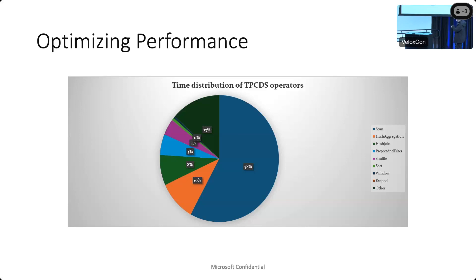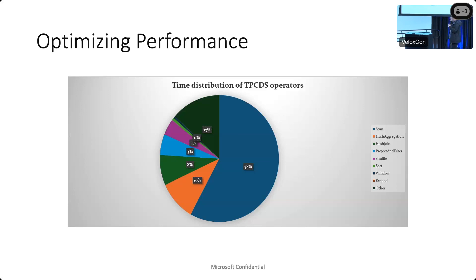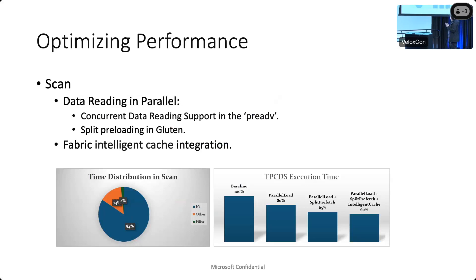This chart is from one of our metrics reports. It shows the time distribution of the TPC-DS operators. From that report, we can see that 58% of time is spent in the scan operator because we read from remote Azure storage. The second largest is hash aggregation, and the third is hash join. So our main focus is to improve the performance of these three operators.